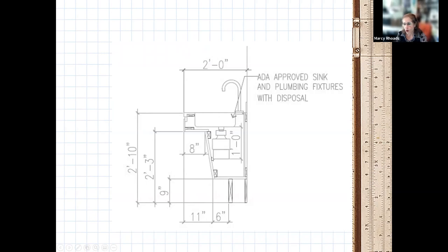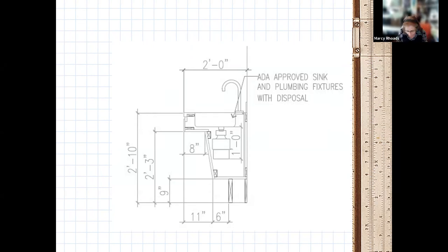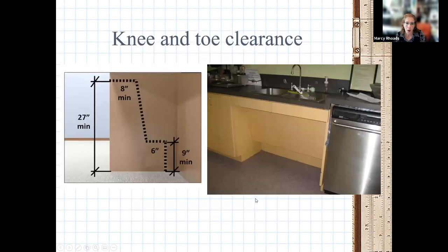Always dimension with something greater than the minimum to allow for construction tolerances. If the minimum is 8 inches, call out 8.5 or 9 inches. Showing exactly the minimum — like 11 inches and 6 inches — creates problems because construction tolerances aren't built in. The 6-inch maximum for toe clearance isn't a critical construction dimension anyway; beyond that it's just airspace, not toe clearance.